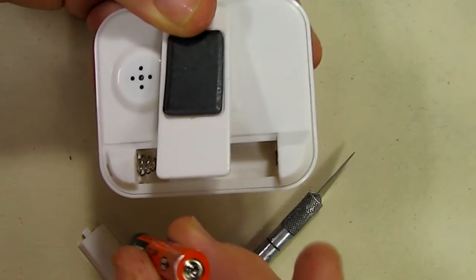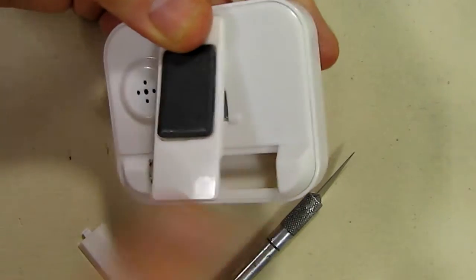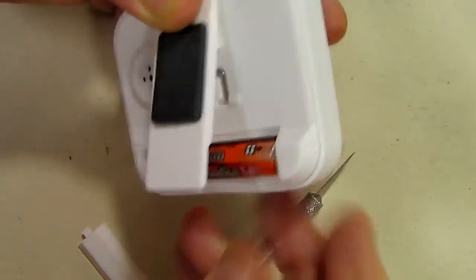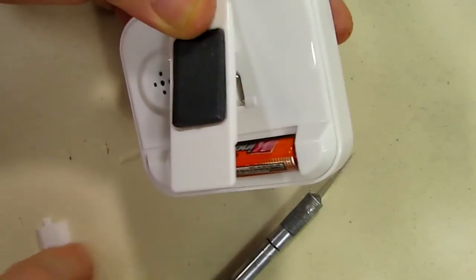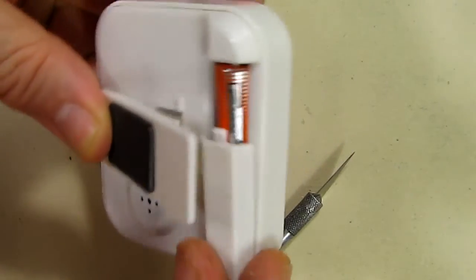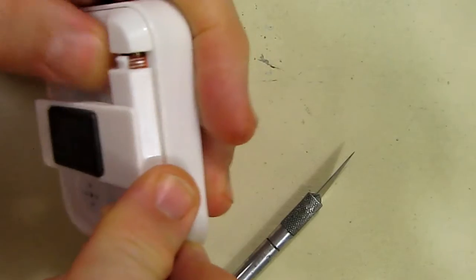Next, it goes back in there with the positive going towards the side that's opposite the piezo alarm, just like that. Then you want to take the cover and place that back in place, and it snaps in like that.